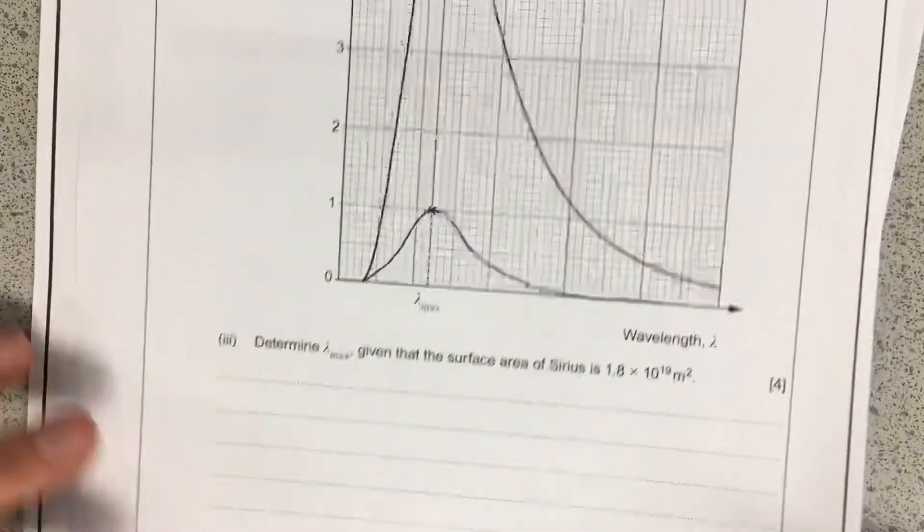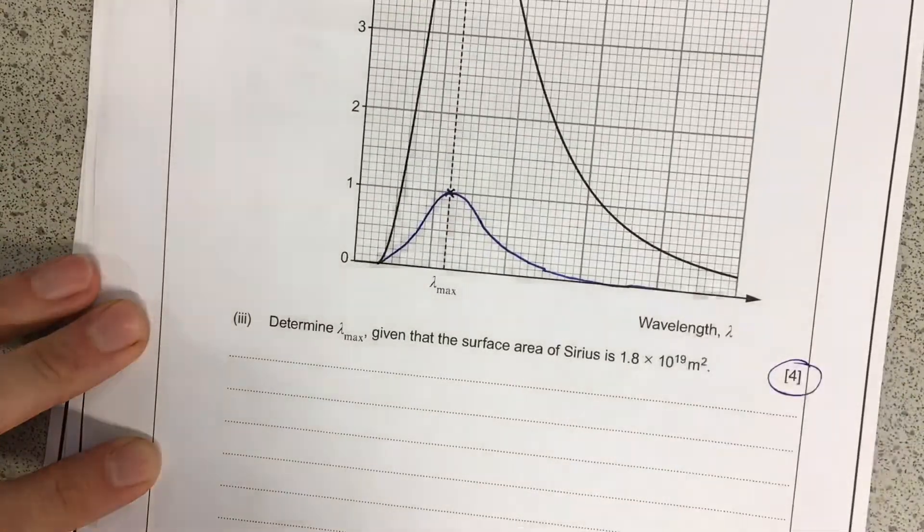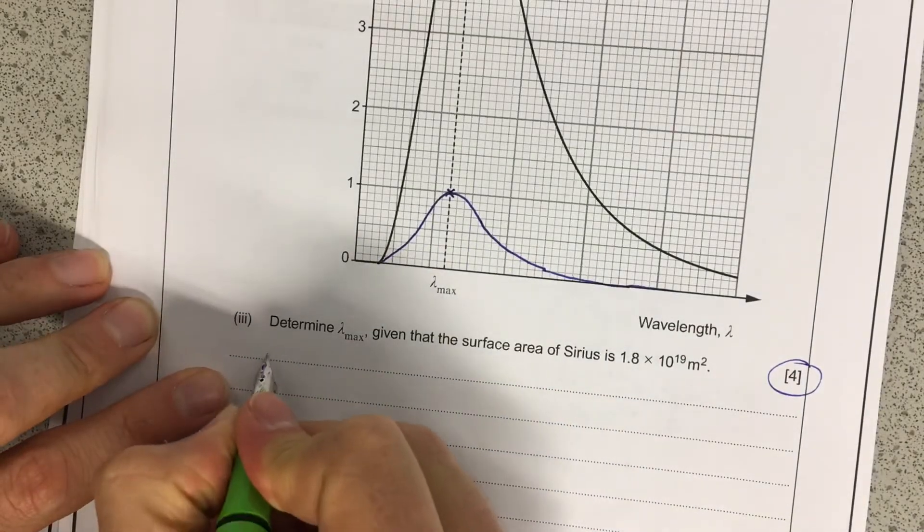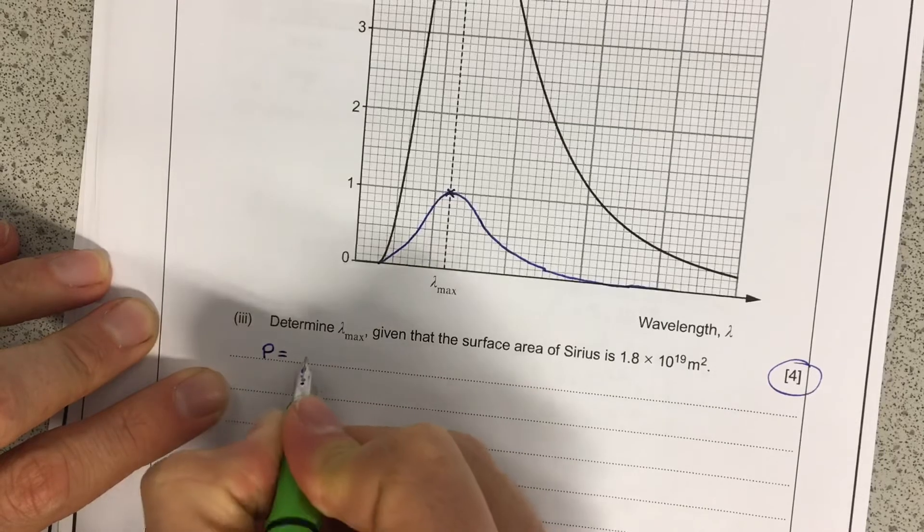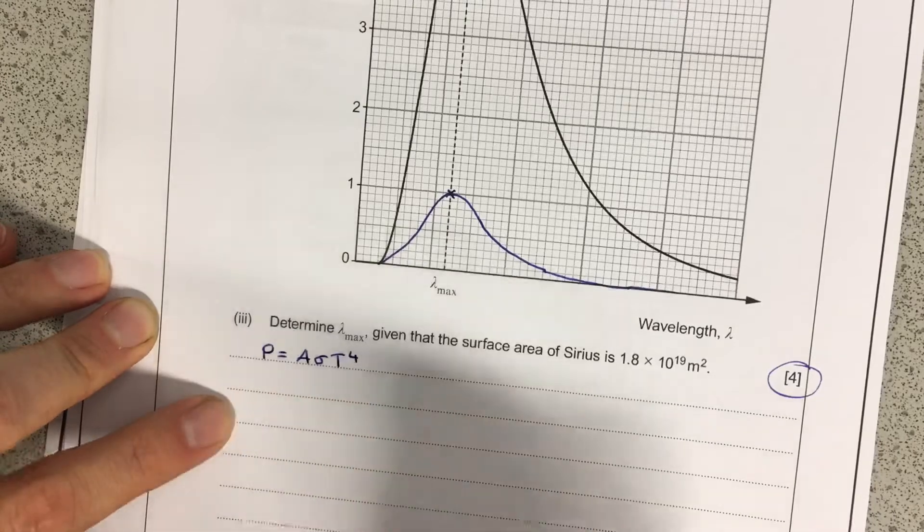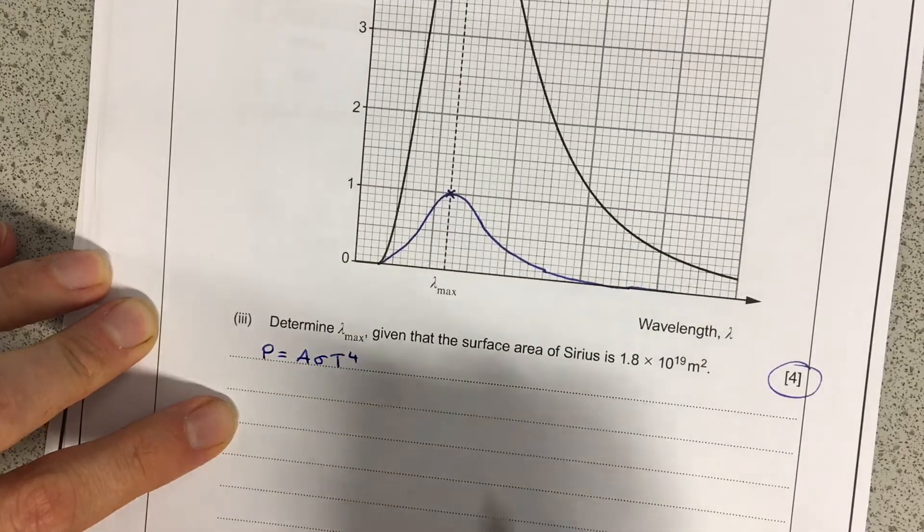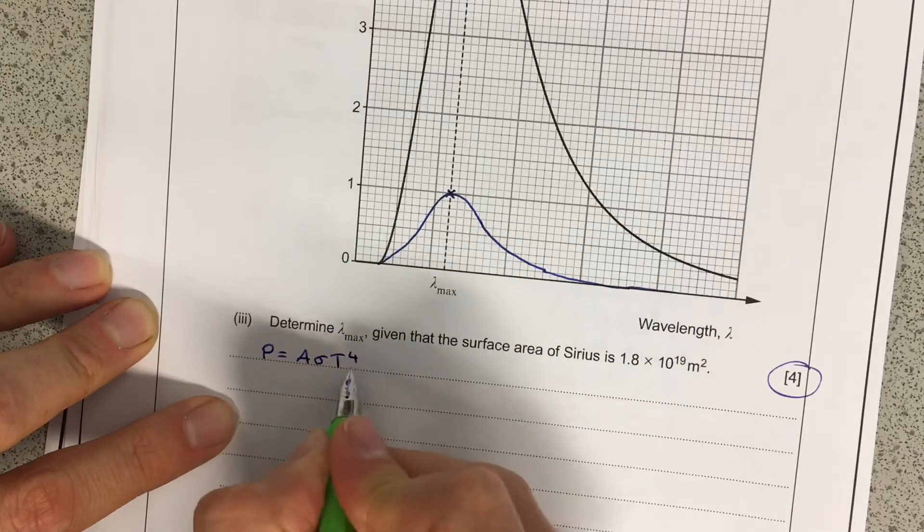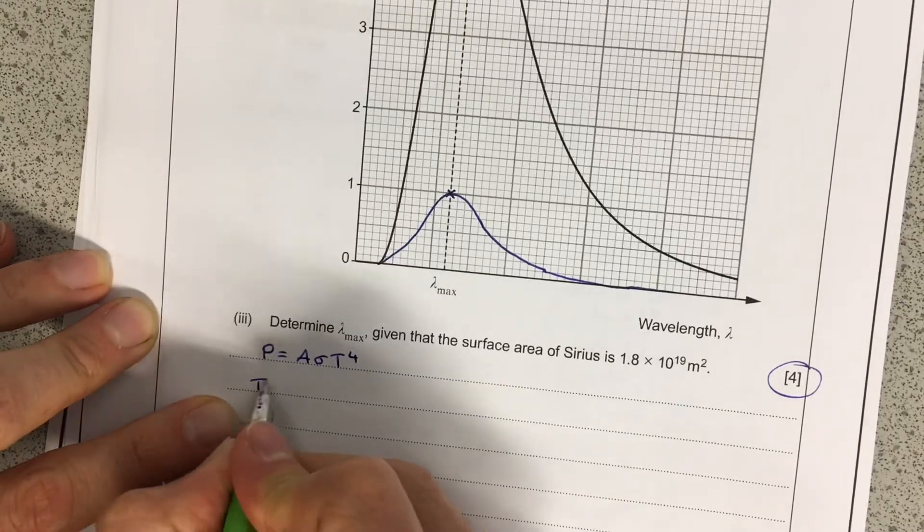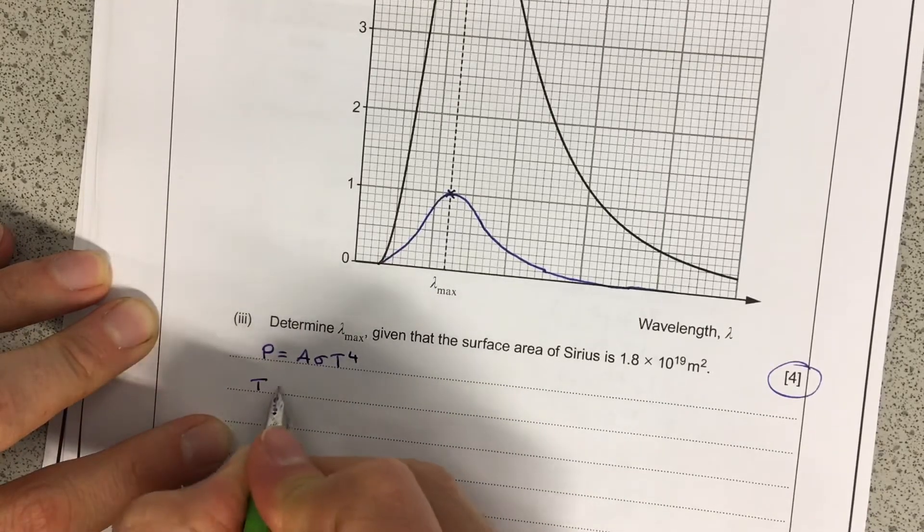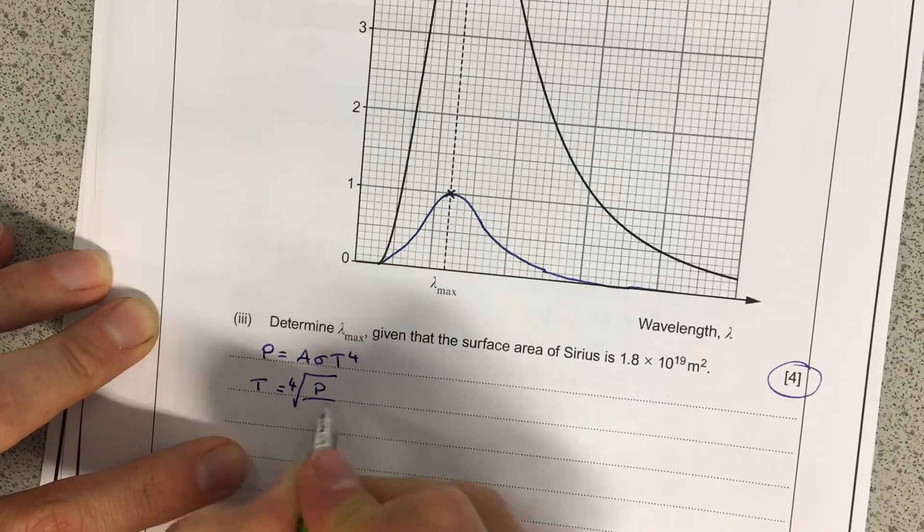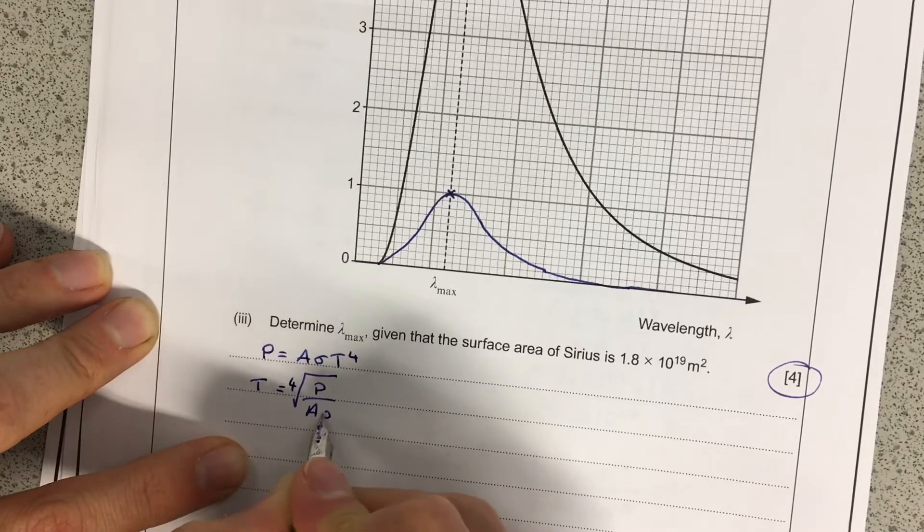Now, this last bit down here is 4 marks, so this is going to be a good skill base here. So they want us to use Stefan's law for this. So they want us to do P equals A, Stefan's constant, T to the 4. And we're going to rearrange that, because we're after temperature. Bear with me, we're going to have to do an extra thing afterwards. So if you do the rearrangement, you'll discover that T is equal to the fourth root of P over A and Stefan's constant.